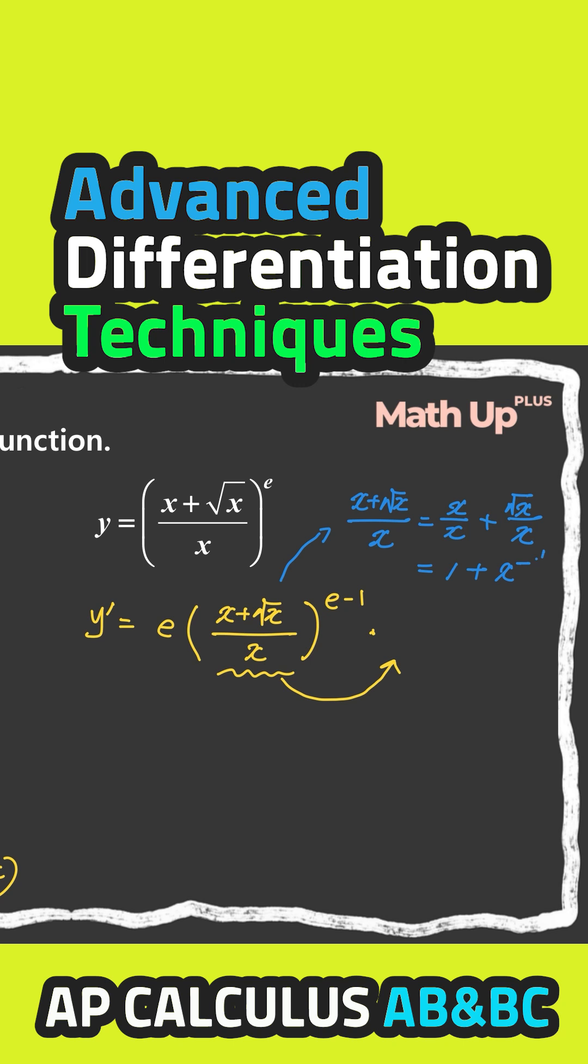So that's x to the negative 1 half. So derivative of this expression is equal to 0 plus power of negative 1 over 2, times x to the negative 1 half minus 1, negative 3 over 2.